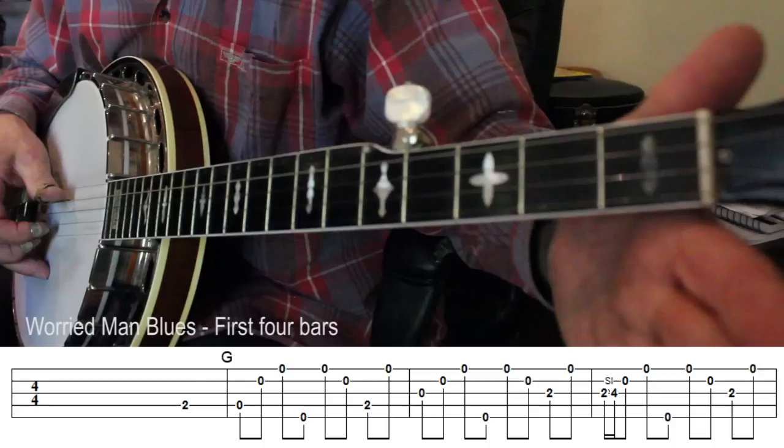In this video we're just going to look at some of the components of the song which we can practice first. The first bar consists of a pickup note, that is a note which occurs before the main beat of the song starts. Then you can see that the forward-backward roll has been slightly modified so that the thumb plays the low D string.